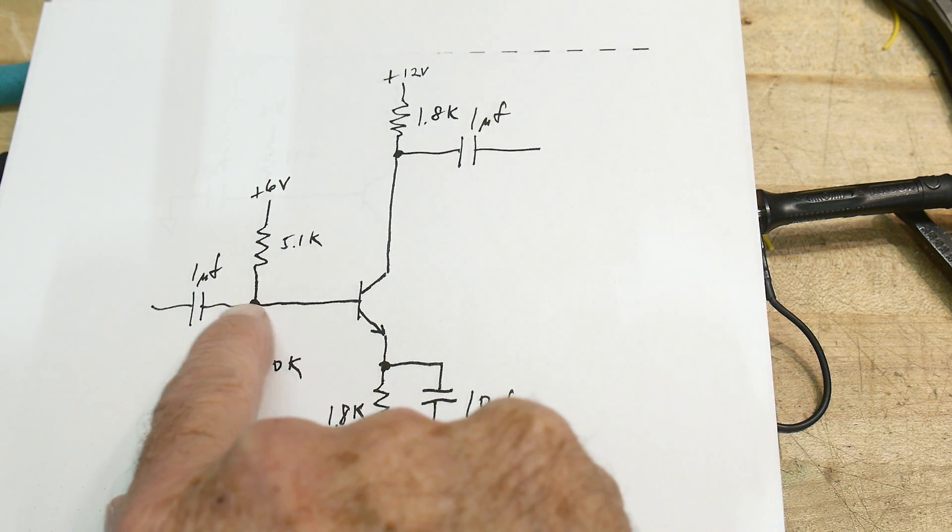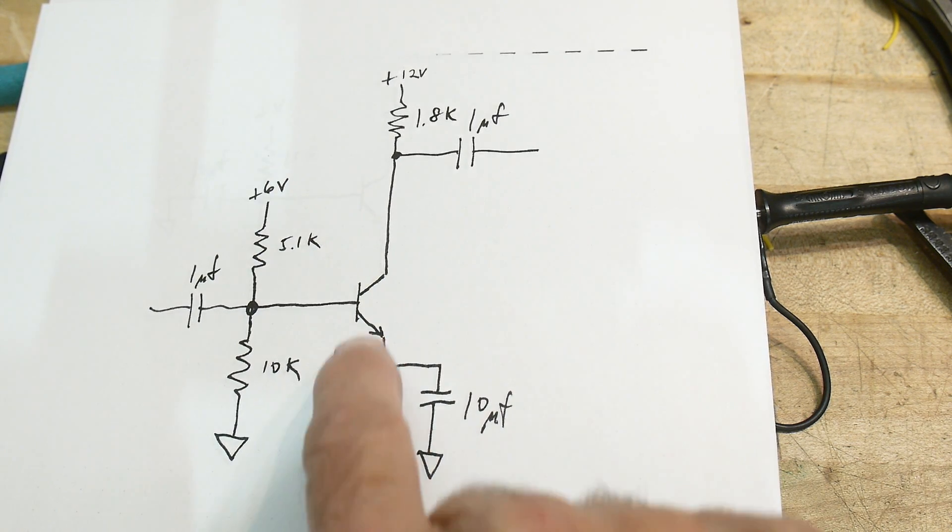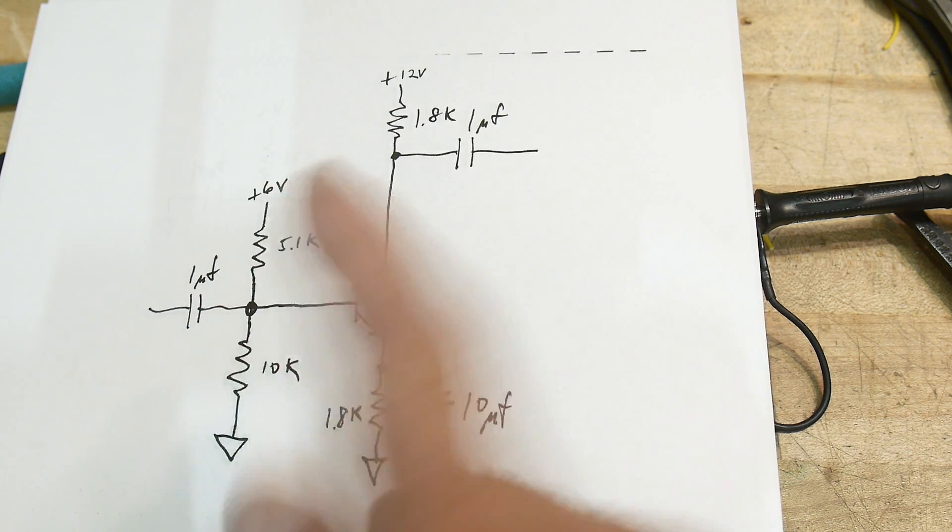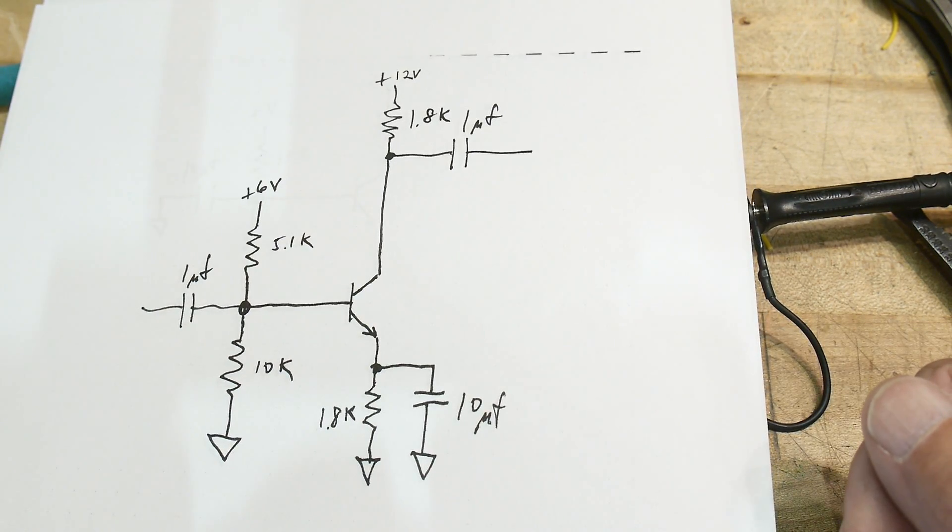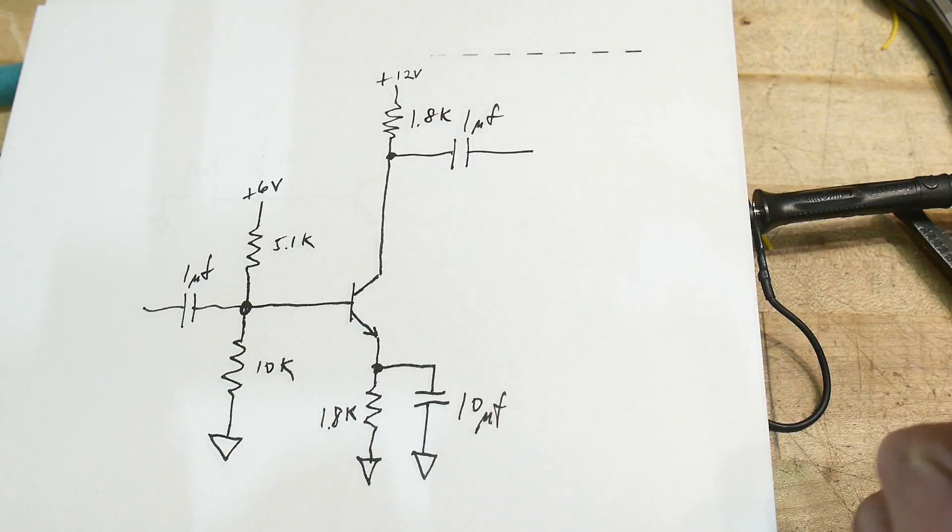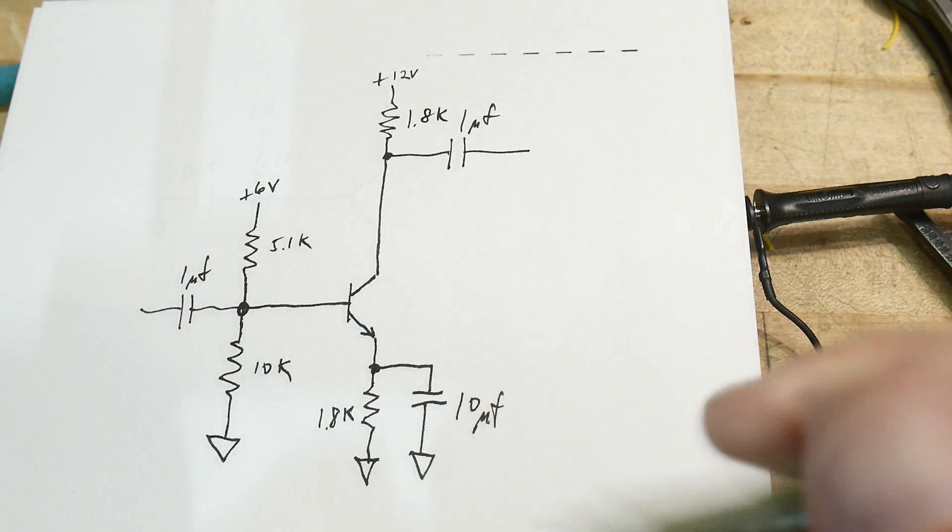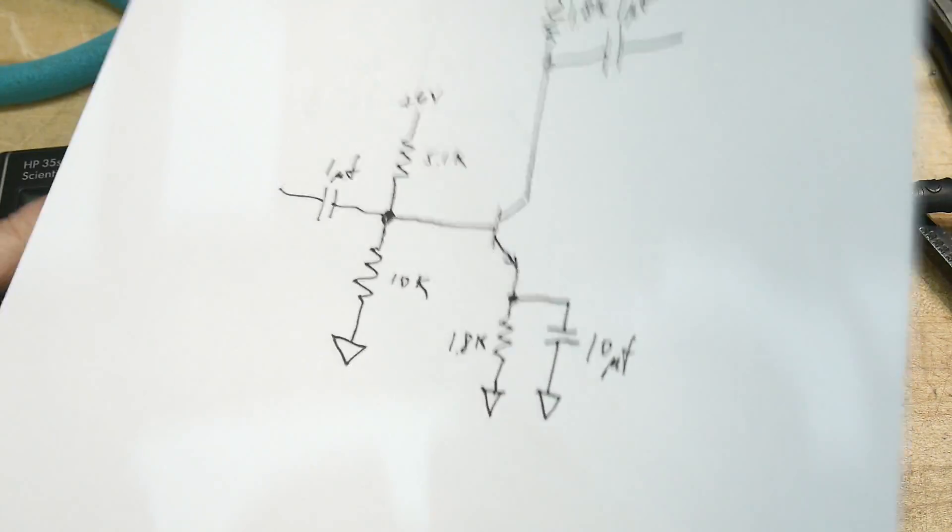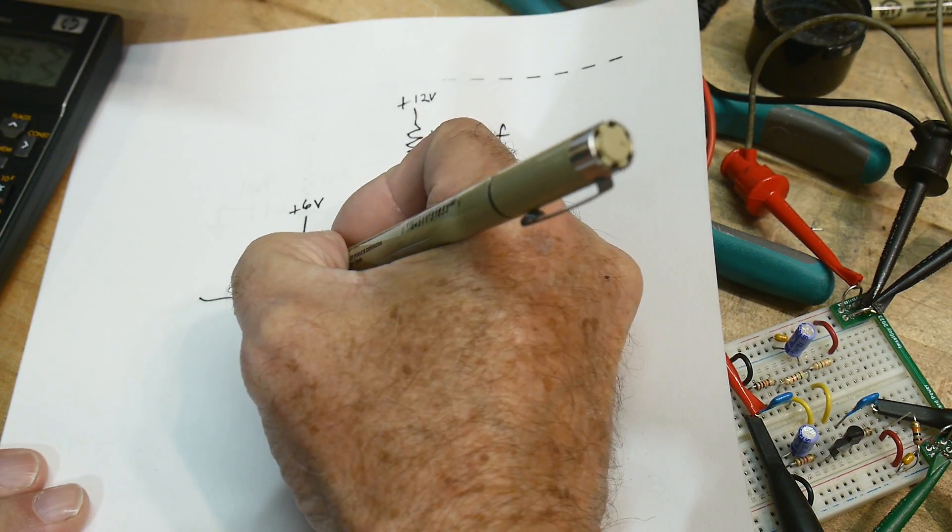So the DC analysis of this thing is pretty simple. We have six volts and ground and we have a divider here and this is a two-thirds divider. So we have two-thirds of the voltage here. So that's four volts. So we have six volts here. We have four volts here.